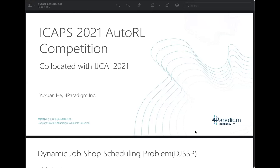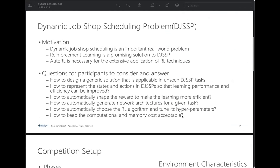Our competition is about dynamic job shop scheduling. Job shop scheduling is a key problem in many real-world manufacturing systems and has many applications. In this competition, we have extended it to the dynamic job shop scheduling problem, short name DJSSP. This commonly encounters stochastic events such as random job arrival, unintended machine breakdowns, and due time changing, all of which happen very frequently in real-world manufacturing settings.